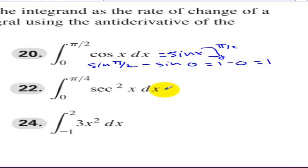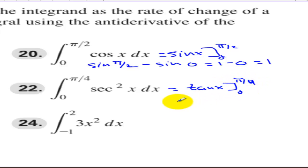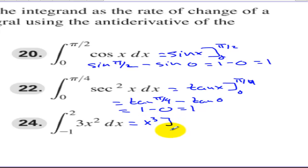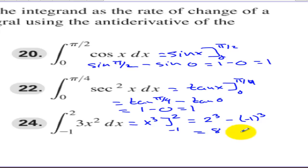The antiderivative of 3x² is x³, evaluated from negative 1 to 2: 2³ minus (negative 1)³ equals 8 minus negative 1, which is 9.